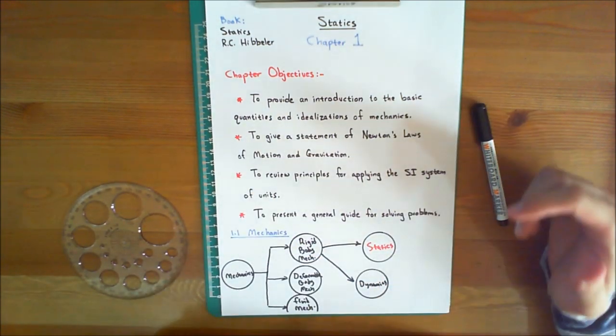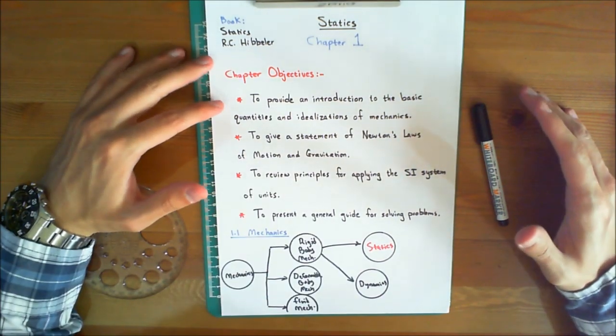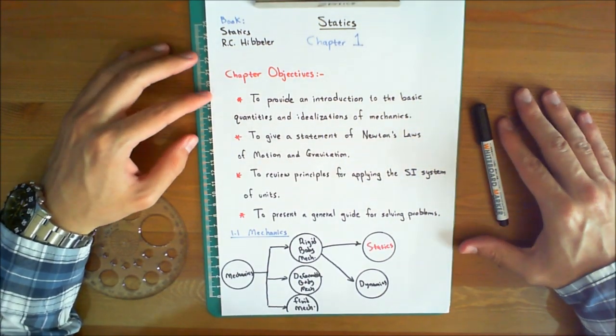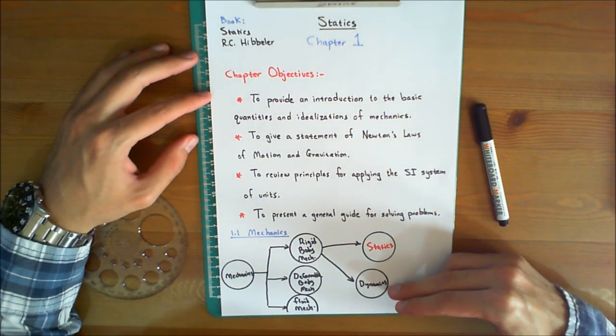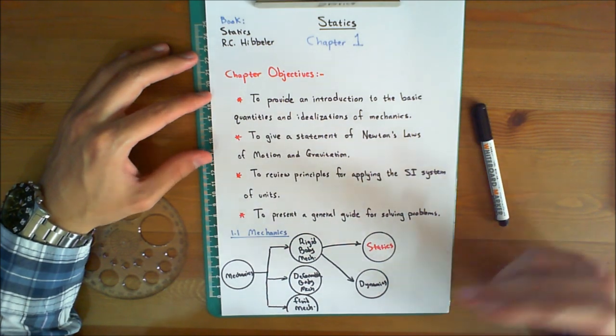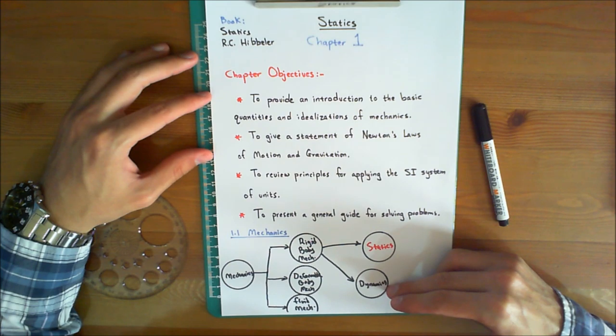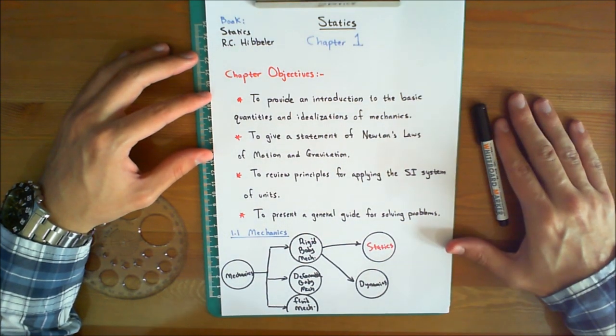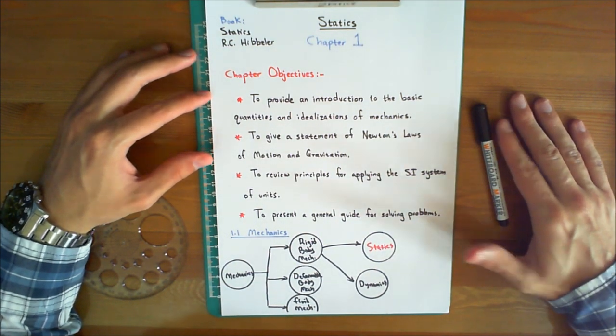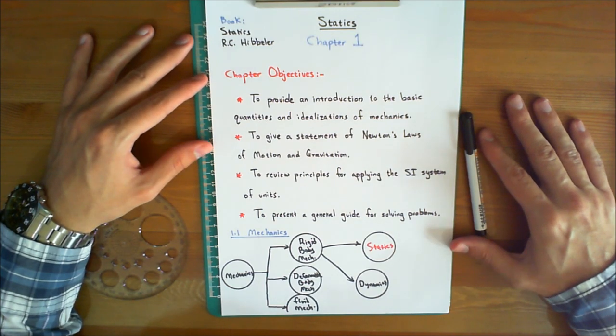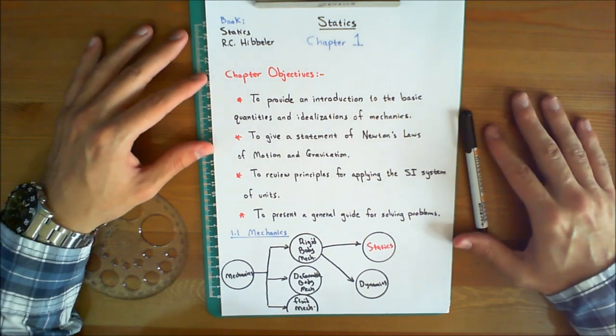Now, statics deals with the equilibrium of bodies, that is, those that are either at rest or move with a constant velocity. Whereas dynamics is concerned with the accelerated motion of bodies, which means that dynamics studies the time element. Although statics can be considered as a special case of dynamics in which the acceleration is zero, statics deserves separate treatment in engineering education since many objects are designed with the intention that they remain in equilibrium.